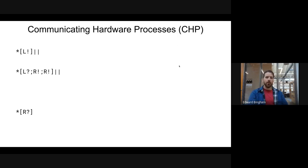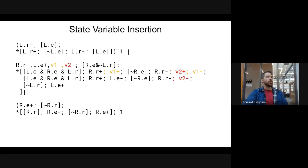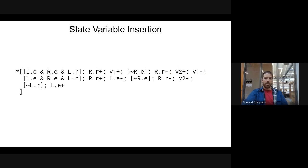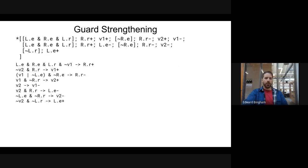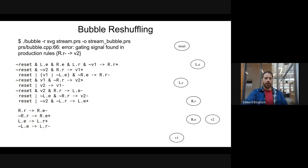So far we've taken our CHP specification for our streaming buffer, turned it into handshaking expansions, done simulation and state variable insertion to eliminate conflicting states, and then done guard strengthening to generate a production rule set. That's where we left off last lecture. We added reset rules and environment rules to be able to simulate it, and now we need to run bubble reshuffling.